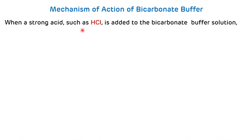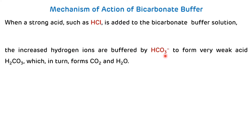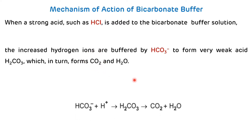When a strong acid like hydrochloric acid is added to the bicarbonate buffer solution, the increased hydrogen ions are buffered by the bicarbonate ion to form a weak acid — carbonic acid (H2CO3) — which in turn forms CO2 and H2O; this CO2 is then excreted via the lungs.